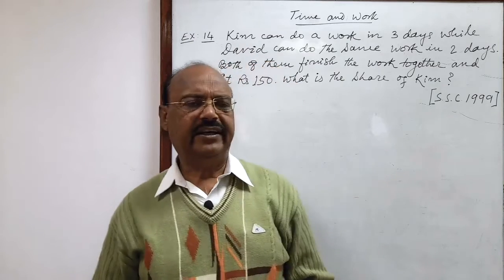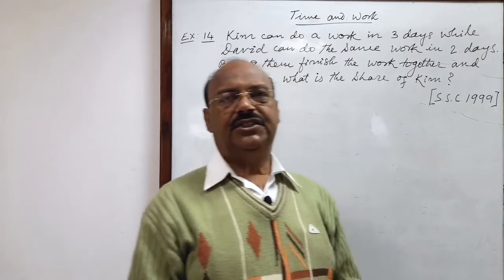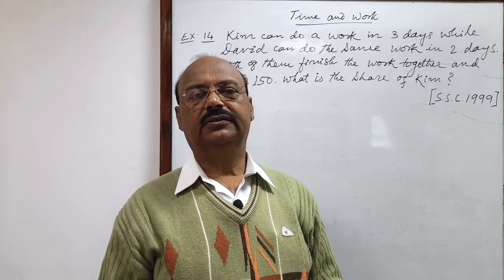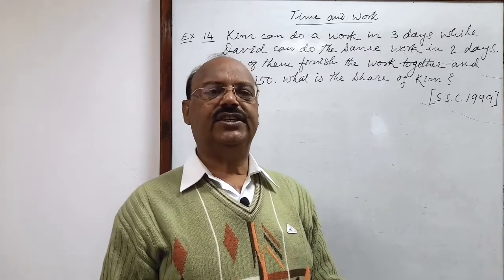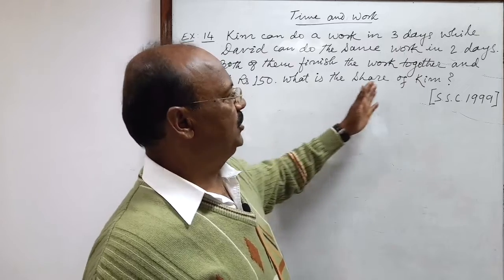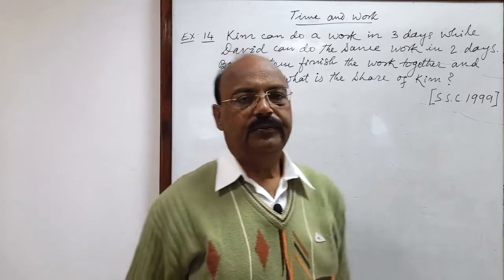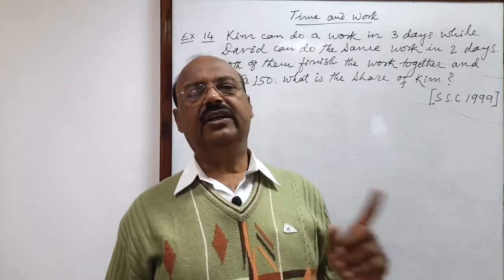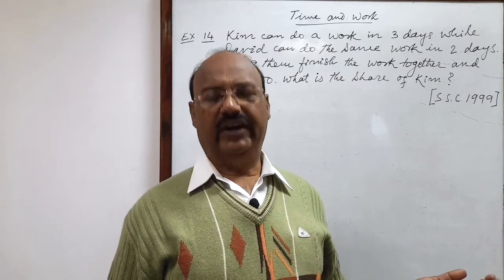How can we approach this question? It is important to note that the share of wages is proportional to the work done in one day — meaning the efficiency of the respective persons. So here we have to find the share of Kim, and for that, we need to know the work done by Kim and David in one day. Share will be proportional to work done by them in one day.